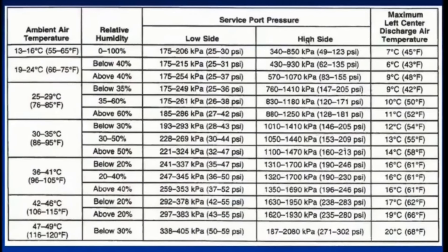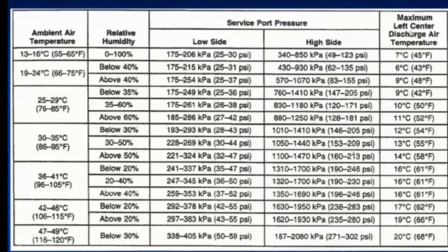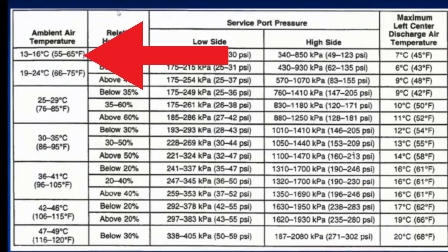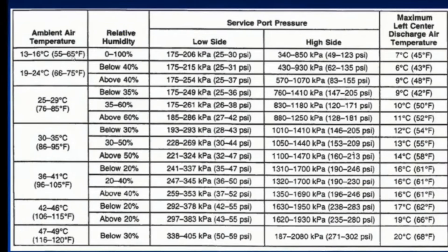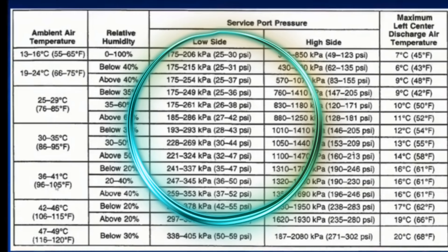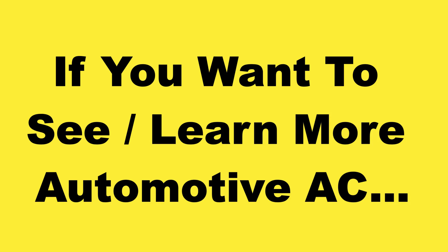Look at the spec chart. Over on the right side where it says 'maximum left center discharge air temperature' — that's a fancy term for vent temperature — in the parentheses we have 45 degrees, which is crisp. But all the way on the other side under 'ambient air temperature' in the parentheses, it's only 65 degrees out there. This is not corpus christi — corpus christi is hot and humid. Right next to this information is the humidity, because humidity also affects the temperature.